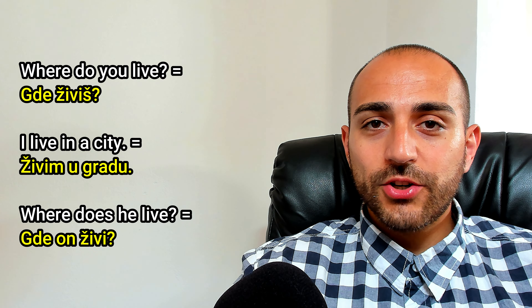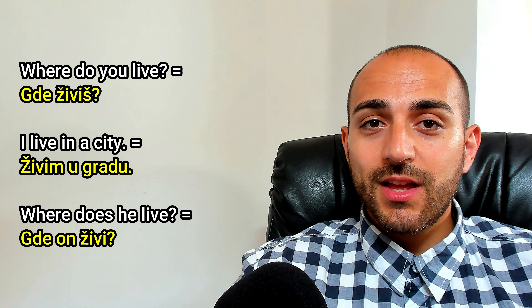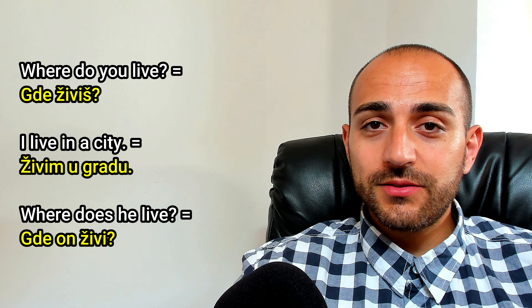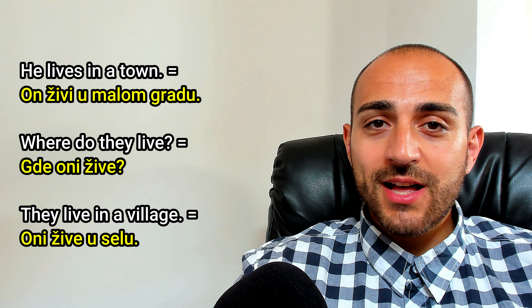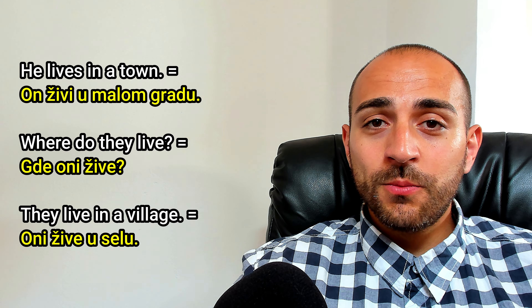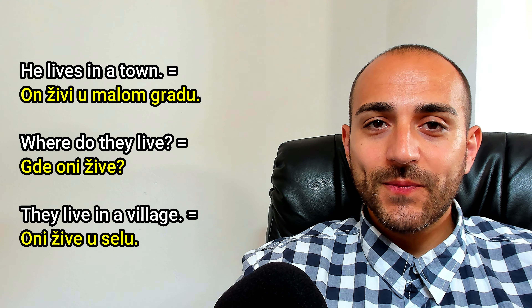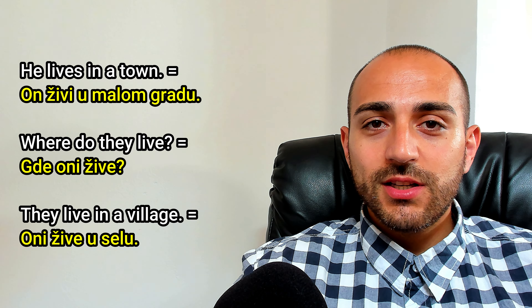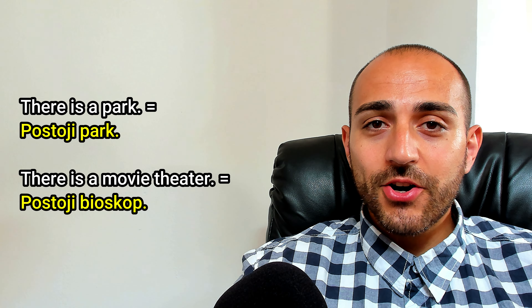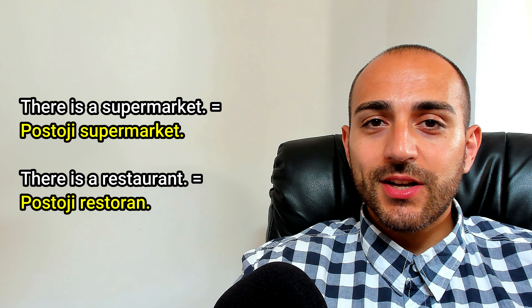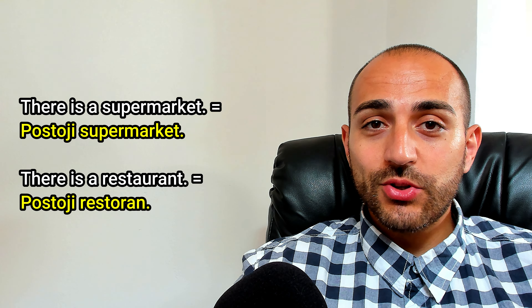Where do you live? Gde živiš? I live in a city. Živim u gradu. Where does he live? Gde on živi? He lives in a town. On živi u malom gradu. Where do they live? Gde oni žive? They live in a village. Oni žive u selu. There is a park — postoji park. There is a movie theater — postoji bioskop. There is a supermarket — postoji supermarket. There is a restaurant — postoji restoran.